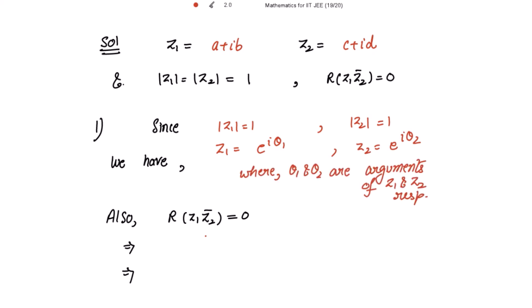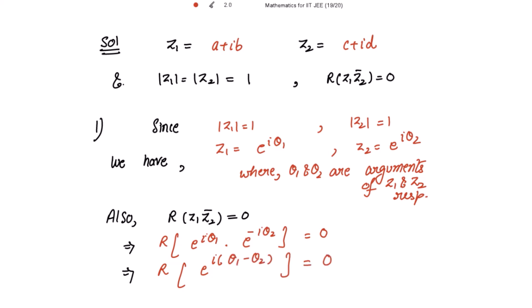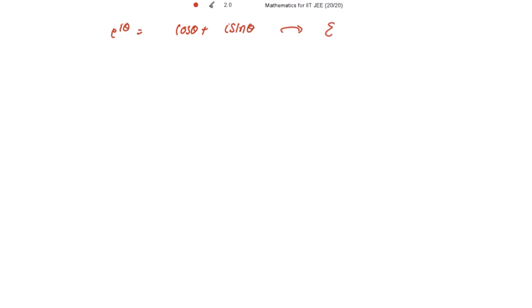It is also given that the real part of z1 into z2 bar is equal to 0. Using this: z1 is e to the power iota theta 1, and z2 bar becomes e to the power negative iota theta 2. So real part of e to the power iota(theta 1 minus theta 2) equals 0. Recall Euler's formula: e to the power iota theta equals cos theta plus iota sine theta.